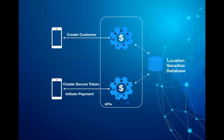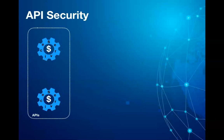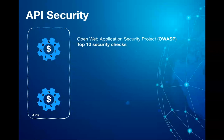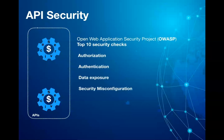As part of your application, for API security you should at minimum test against the OWASP — Open Web Application Security Project — top 10 security checks. These checks include authorization, authentication, data exposure, API rate limiting, security misconfiguration, injection, and logging and monitoring.